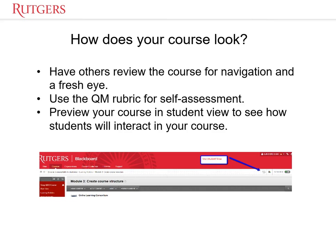Once you start putting it together, how does your course look? Have other people review it and see how they feel about the course navigation — it gives you a fresh eye. Use the QM rubric to self-assess your own course to see how it's flowing. It's also a good idea to use the student view in Blackboard to see how students are going to view and interact with your course. I hope this gives you a few ideas on putting together and structuring your entire course. Thank you.